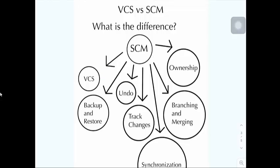In source code management, we'll be able to check out all of our versions, manage them, and see all the different types of versions we have. We'll also be able to check our backup and restore, do undo features, track changes, synchronize our code, do branching and merging, and know the ownership of the different commits our team puts into our branches. So version control system is basically to manage versions of our code, while source code management is an overarching idea of all these different features we can use to benefit our development.